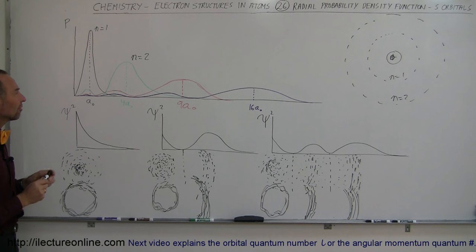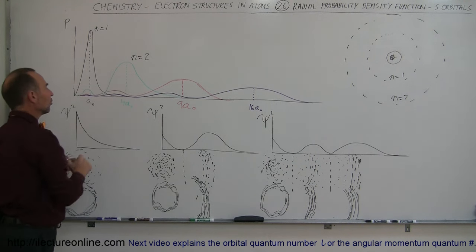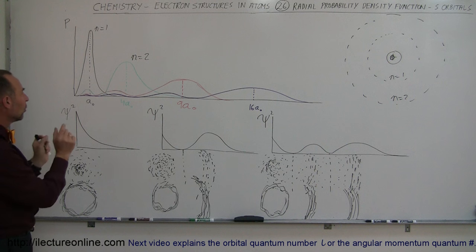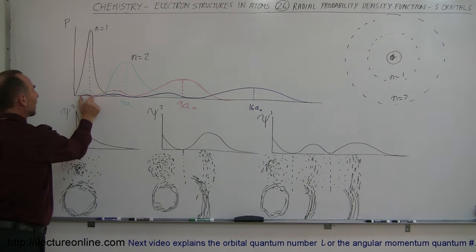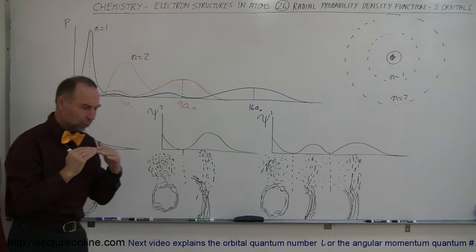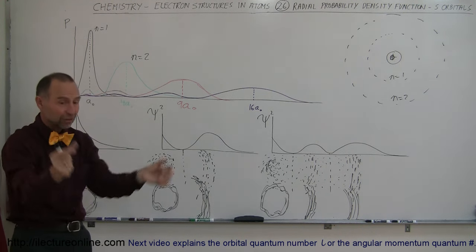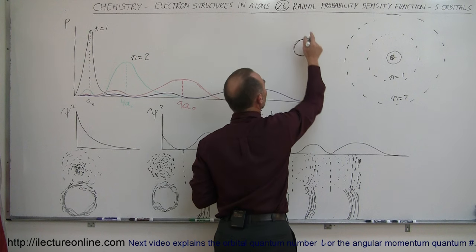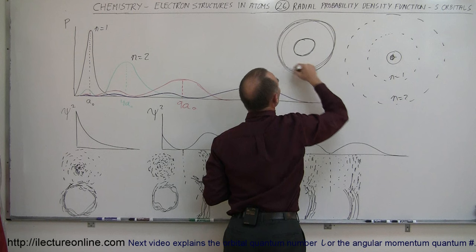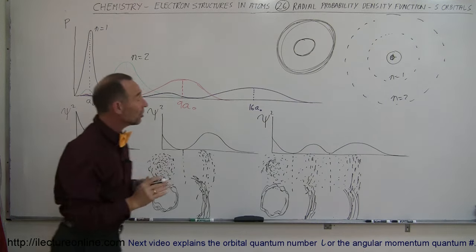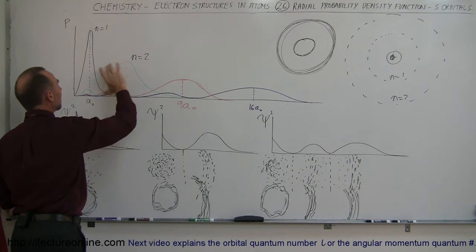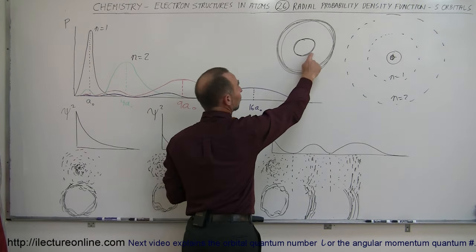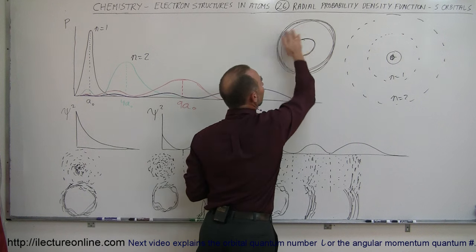But that's not the only place where you could potentially find the electron — notice there's another little hump. At the n=2 energy level, there are basically two places where the electron can reside: one at the smaller radius and one at the larger radius. The S orbital for the second energy level isn't just a single spherical shell — it's an innermost shell with a small probability and an outermost shell with a much greater probability, as shown by the relative heights of these curves.